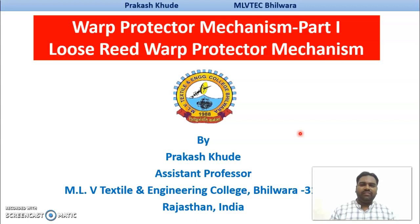We will first speak about the loose reed warp protector mechanisms. These mechanisms come under your auxiliary motions of your loom. The auxiliary motions are important for improving your quality of fabric and improving your productivity of your loom. Under this, we have the warp protector motions, the warp stop motion, web stop motion, and the temple break. All these parameters come under your auxiliary motions.